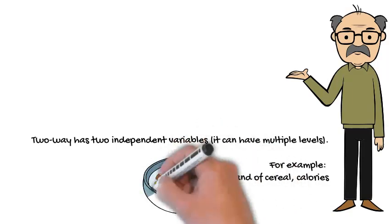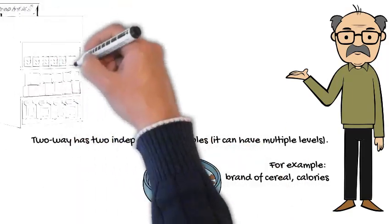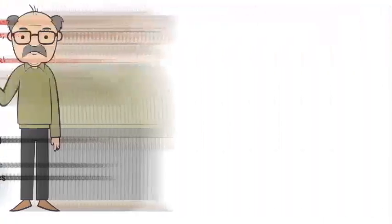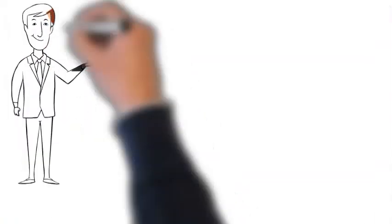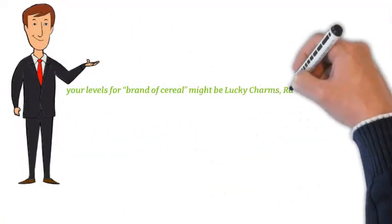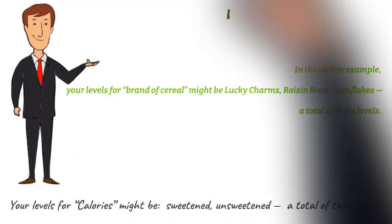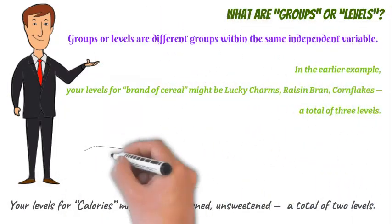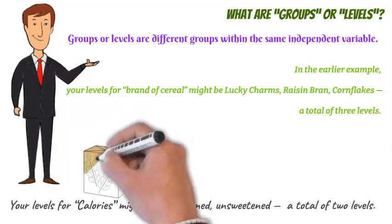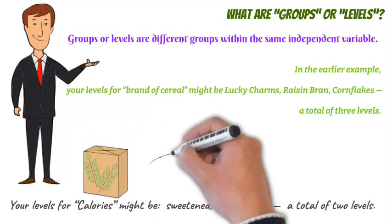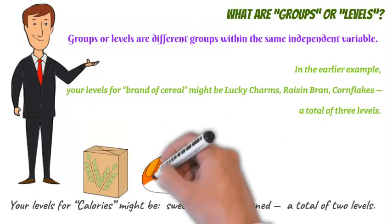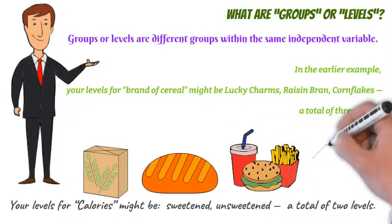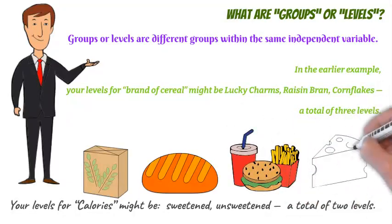So what are groups or levels? Groups or levels are different groups within the same independent variable. In the earlier example, the levels of brand of cereal might be Lucky Charms, Brazen Brand, and Corn Flakes — a total of three levels. The levels for calories might be sweetened and unsweetened — a total of two levels.